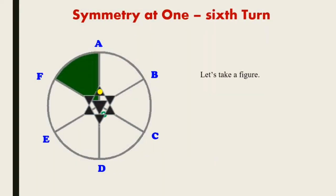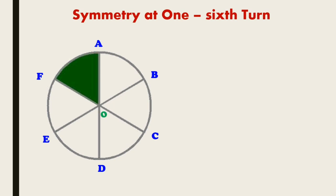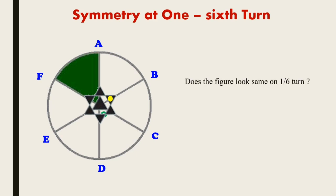Let's take a figure. There is a yellow point on it. This figure is at point A. Now let's rotate this figure one by six turn — from point A to point B. After rotating, the yellow mark has moved from A to B. But this figure is not looking the same after one by six turn.